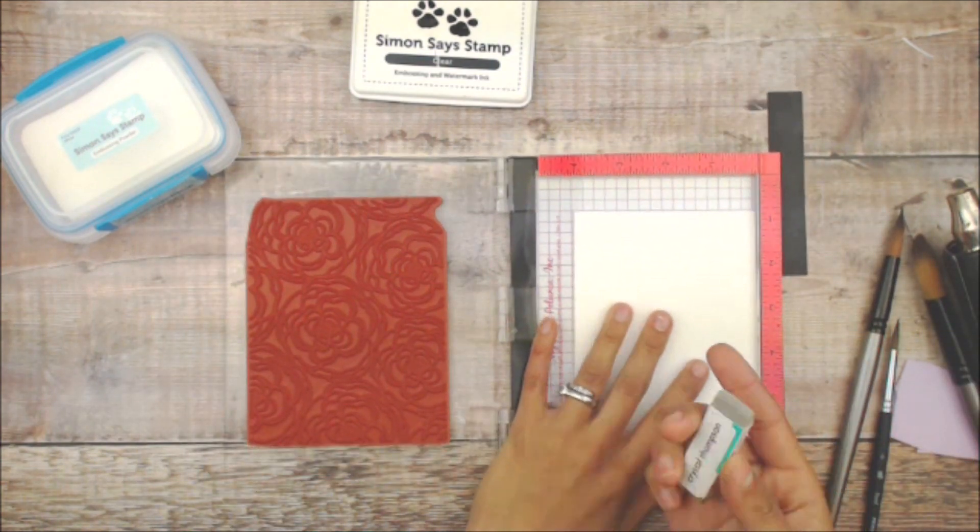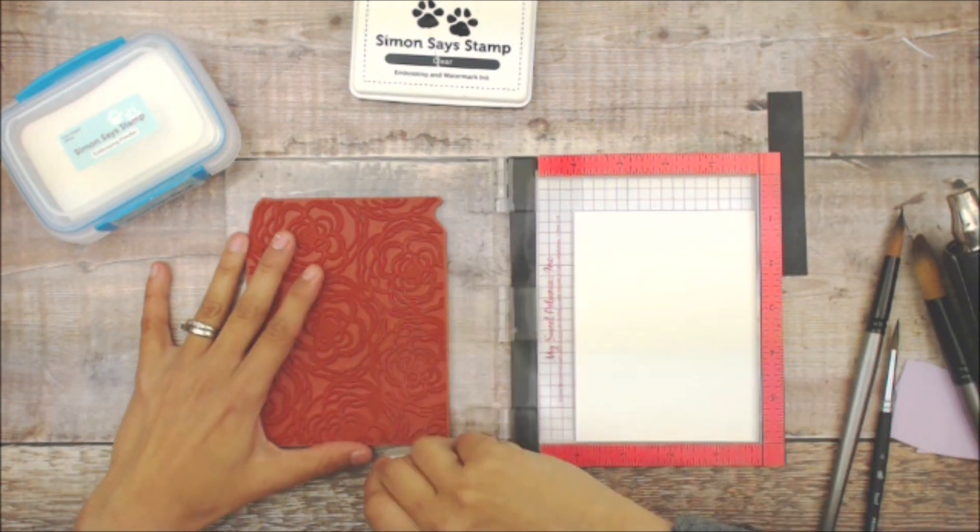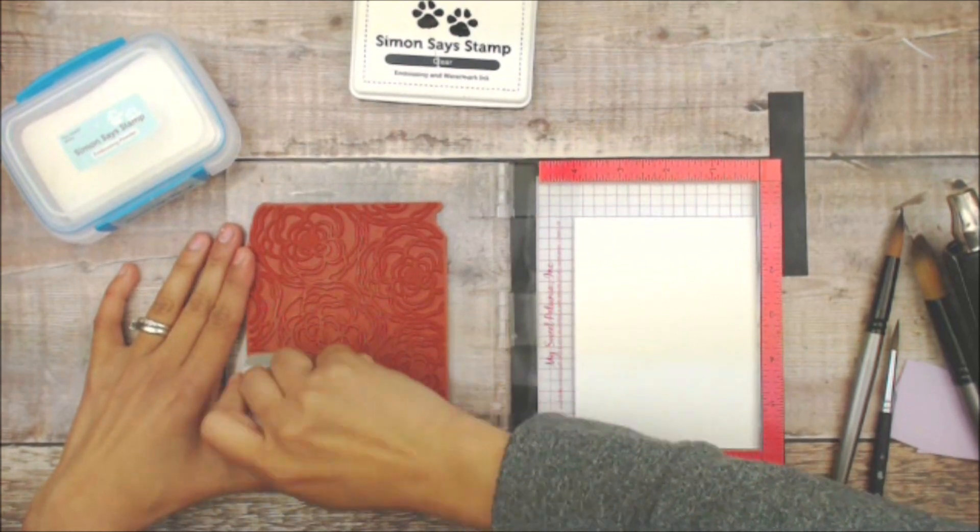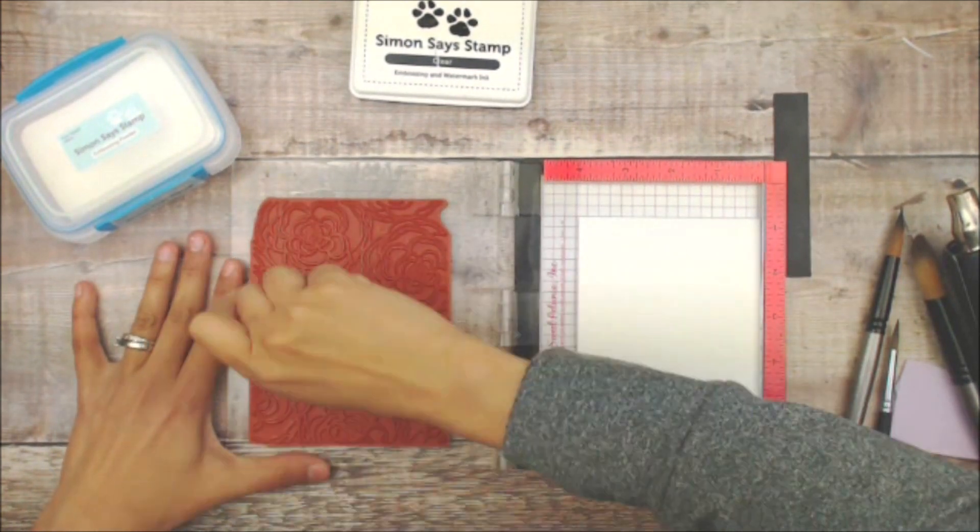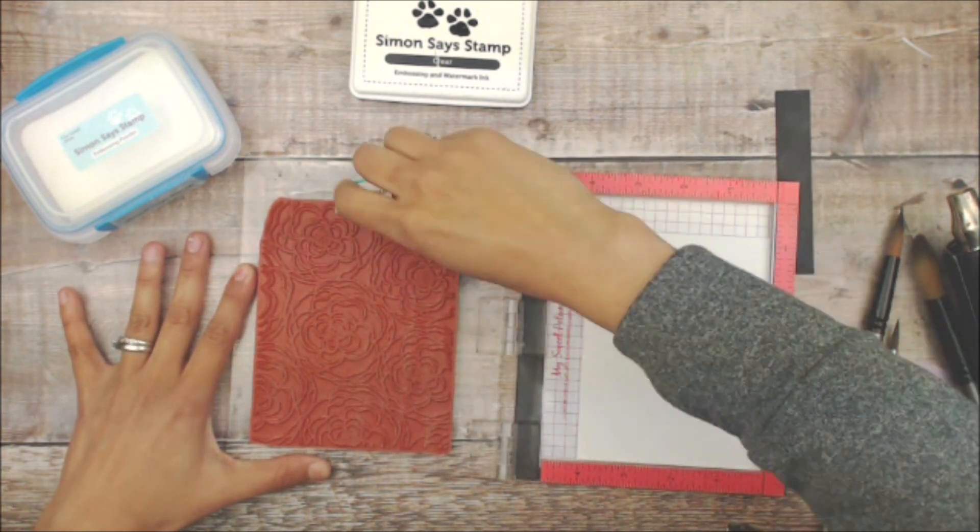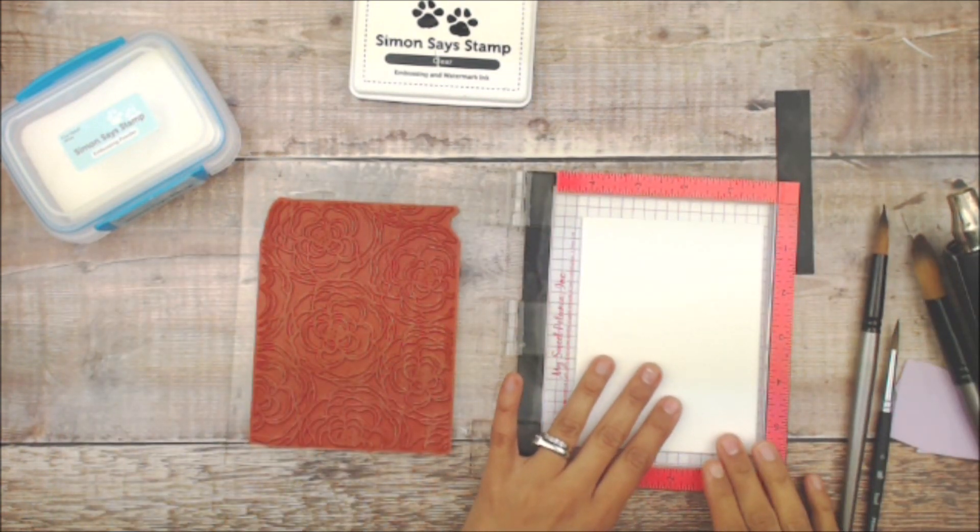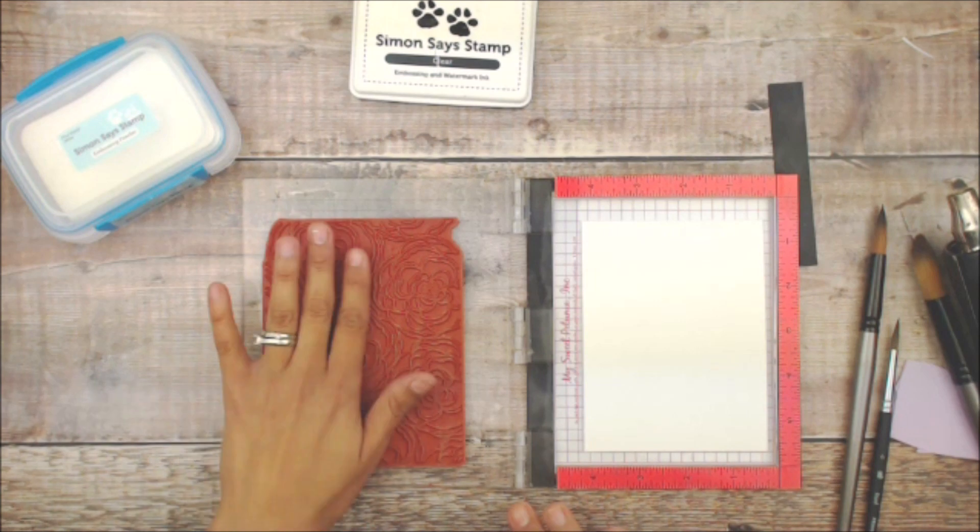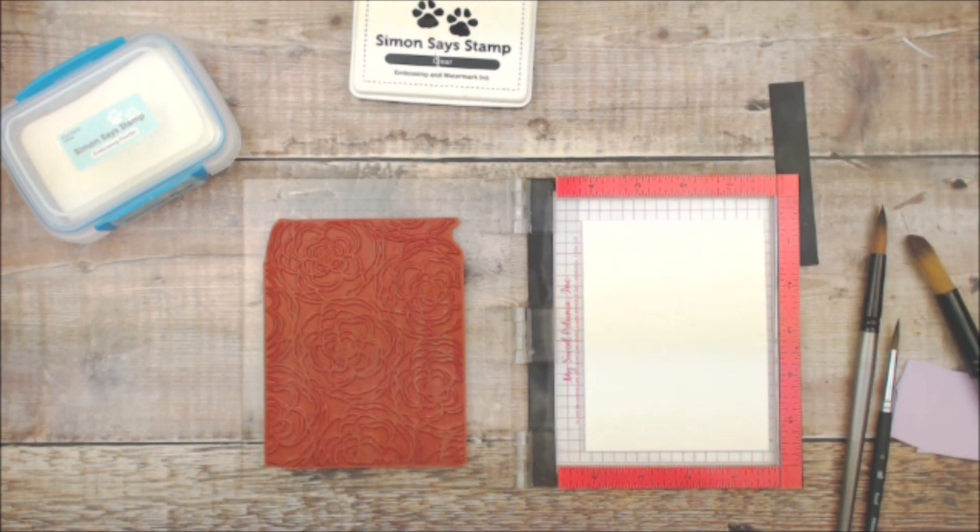We're going to begin by rubbing some on it with an eraser. This is a background stamp and Unity has great quality. I love their stamps, but I find that by scrubbing a new stamp, it just gives it a little cleaner image.